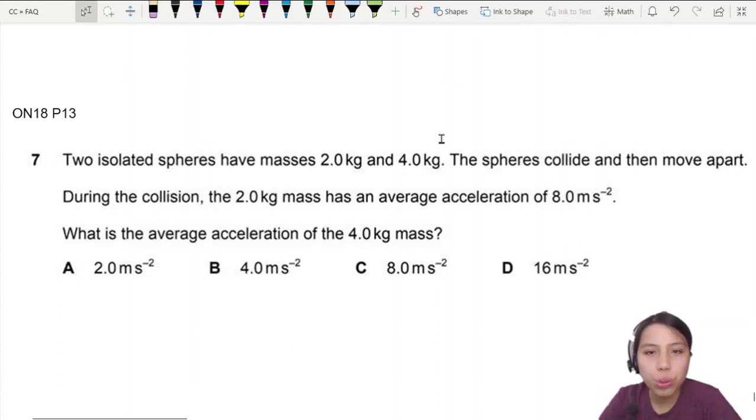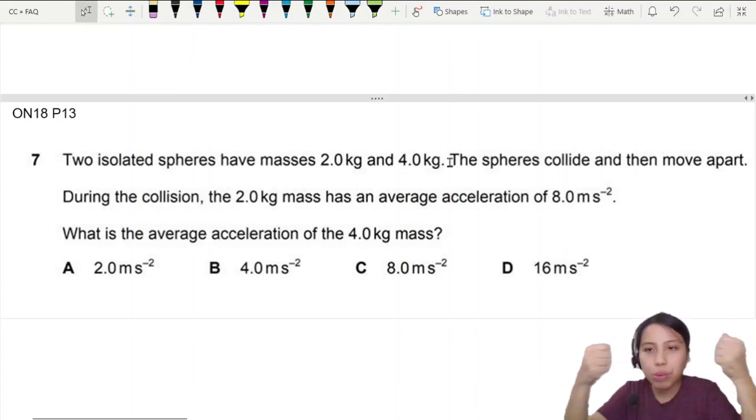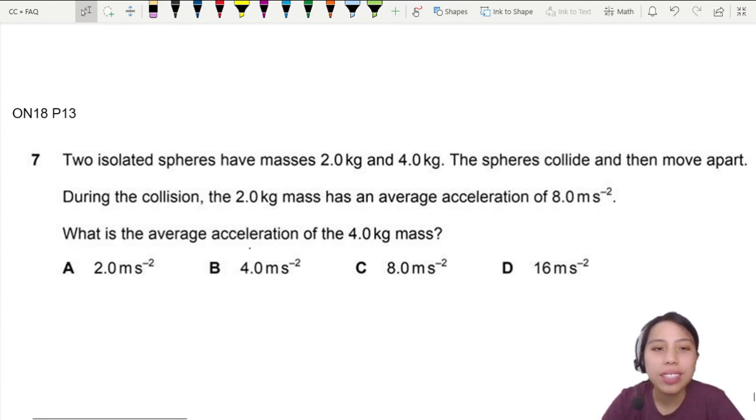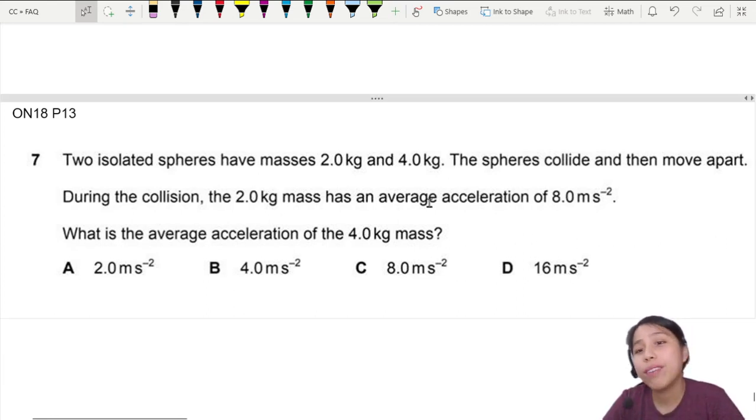Two isolated spheres have mass 2 and 4. They collide, they move apart. During the collision, the 2kg mass has an average acceleration of 8. What is the average acceleration of the other ball, the 4kg mass?